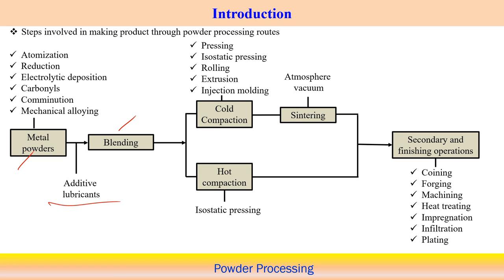Cold compaction is associated with pressing and isostatic methods. Rolling, extrusion, and injection molding operations can also be applied to achieve cold compaction of the powders. Even for hot compaction, isostatic pressing can also be followed.